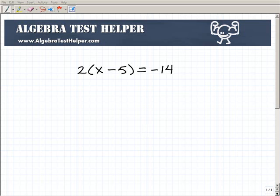For me, I've been doing this for 25 plus years, so I can kind of do this in my sleep. But when you're looking at this equation, you have 2 times x minus 5 equals negative 14. So what is the first thing we want to do?